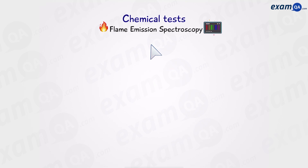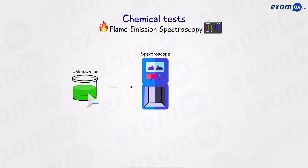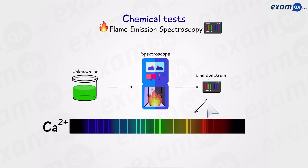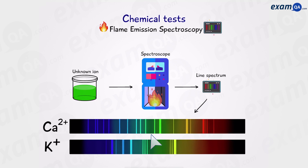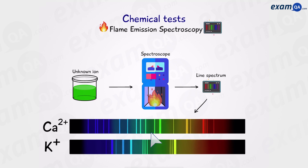Flame emission spectroscopy. We have a sample of an unknown metal ion and we're going to place the sample in a machine called a spectroscope. Once the sample is in the machine a flame runs through it and we get a line spectrum. Here's what an example line spectrum of calcium would look like, and here's one for potassium. You don't have to memorise where the lines go or explain why it happens. The reason the lines are different is to do with electronic structure — every single element has a unique electronic structure and therefore will have different lines in their spectrum. If the concentration of the ions is low, the lines will also be dimmer. The lines will still be in the same place regardless of concentration.